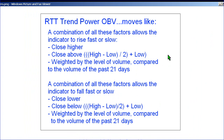The RTT Trampower moves based on a combination of factors: a higher or lower close, the position of the close on the range of the bar, and the volume relative to the previous 21 days volume. All these factors add positives and negatives to the movement of the indicator.